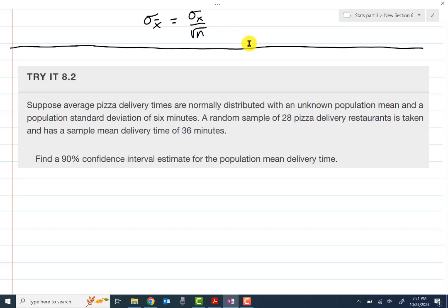Our first example here is we have a normally distributed situation. We don't know the population mean, so this would be that mu would be unknown to us. That's what we're going to try to estimate. Population standard deviation we do know, which that is unusual. Many times you don't have that information, but they give us sigma sub x is equal to 6. And then we have a random sample of 28 pizza delivery drivers. That will be our letter n. And the sample mean of 36 minutes.